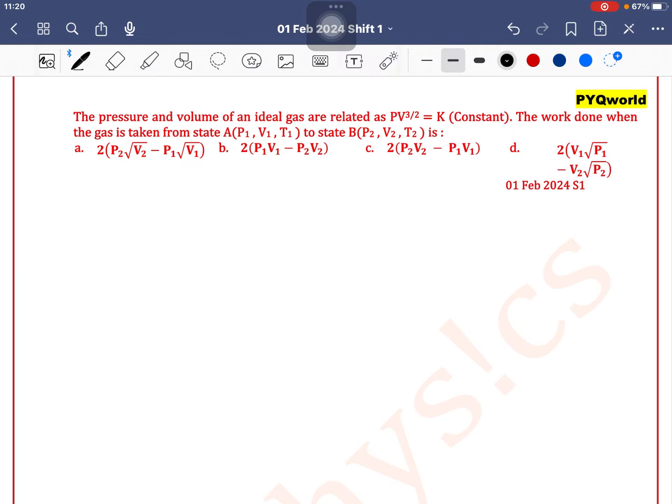The pressure and volume of an ideal gas are related as P into V to the power 3 by 2 is equal to constant. The work done when the gas is taken from P1, V1, T1 to P2, V2, T2.